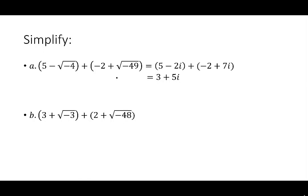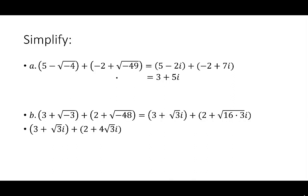Our next problem says 3 plus the square root of negative 3 plus 2 plus the square root of negative 48. Again, I'll start by rewriting the expression. 3 plus the square root of negative 3 is 3 plus the square root of 3 times i. 2 plus the square root of negative 48 takes a little bit more work. The square root of negative 48 can be broken down into smaller parts, so I'm going to write this as 2 plus the square root of 16 times 3 times i. Then that becomes 2 plus 4 square root of 3i. You might find it helpful to put a 1 in front of the square root of 3i to remind yourself of the coefficient.